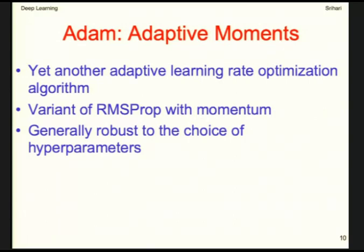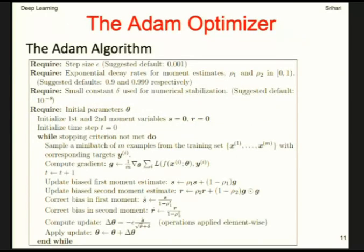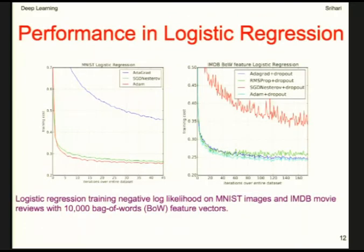Adam is an even more popular variant of RMSProp combined with momentum. It is generally robust to hyperparameter choices. The Adam optimizer corrects bias in the first and second moment estimates, working with momentum variables ρ₁ and ρ₂ and element-wise (Hadamard) operations. It combines adaptive learning rates with momentum — hence 'Adam' stands for adaptive moment estimation.